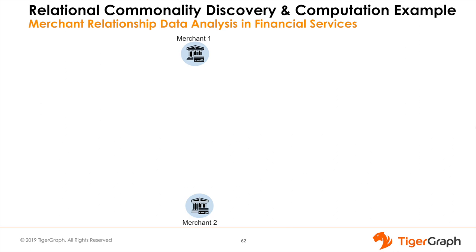Let's consider a common question answered with a graph database by customers in multiple industries including financial services, pharmaceutical, healthcare, telecom, internet, and government: Given a set of business entities, how are they related? Do they have customers or patients in common? And how is the relationship evolving over a period of time? TigerGraph is a native graph platform, which means merchants, customer accounts, and payments are represented as business entities with relationships among them included in the data model. It's quite easy to visually find common customers between two merchants in Graph Studio. But how do you find and export common customers as part of a real-time GSQL query, add up the spending among customers, and find customers who shop at one merchant but do not yet shop at another? Relational commonality discovery and computation capability is used to answer all of these questions.